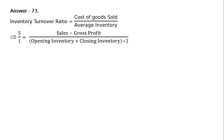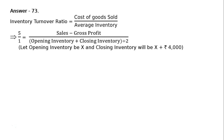To find cost of goods sold, we calculate sales minus gross profit. Average inventory is opening inventory plus closing inventory, whole divided by 2. Let the opening inventory be x and closing inventory be x plus 4000.